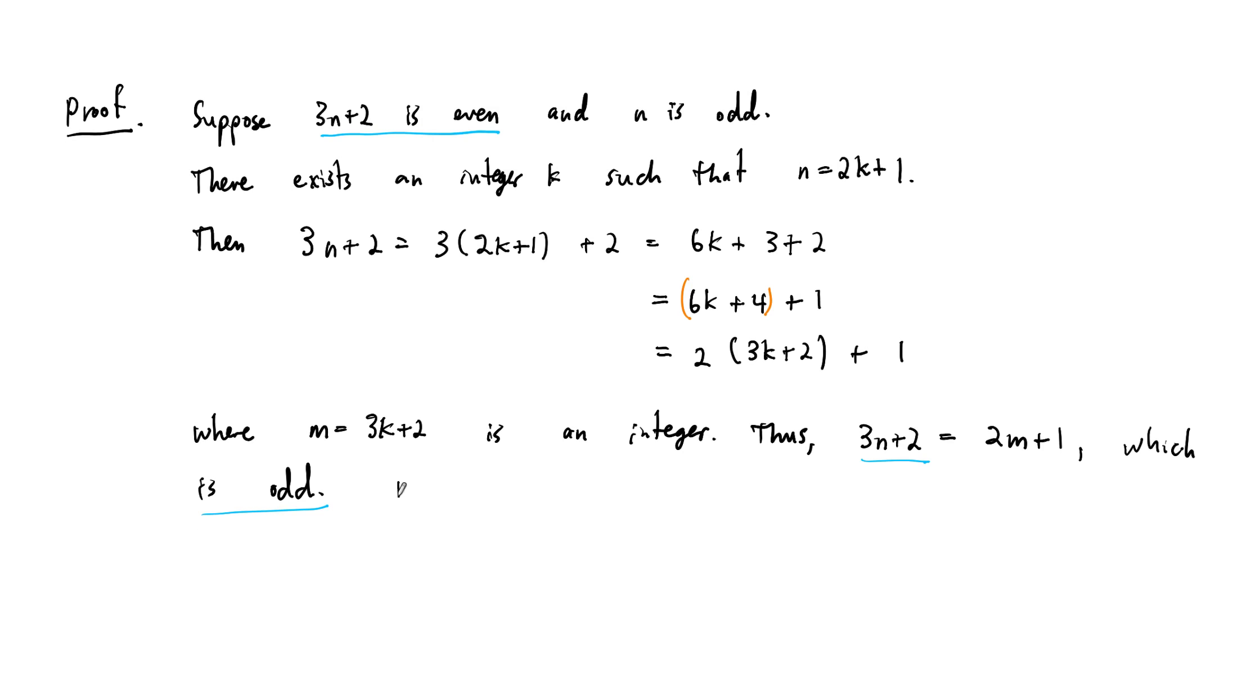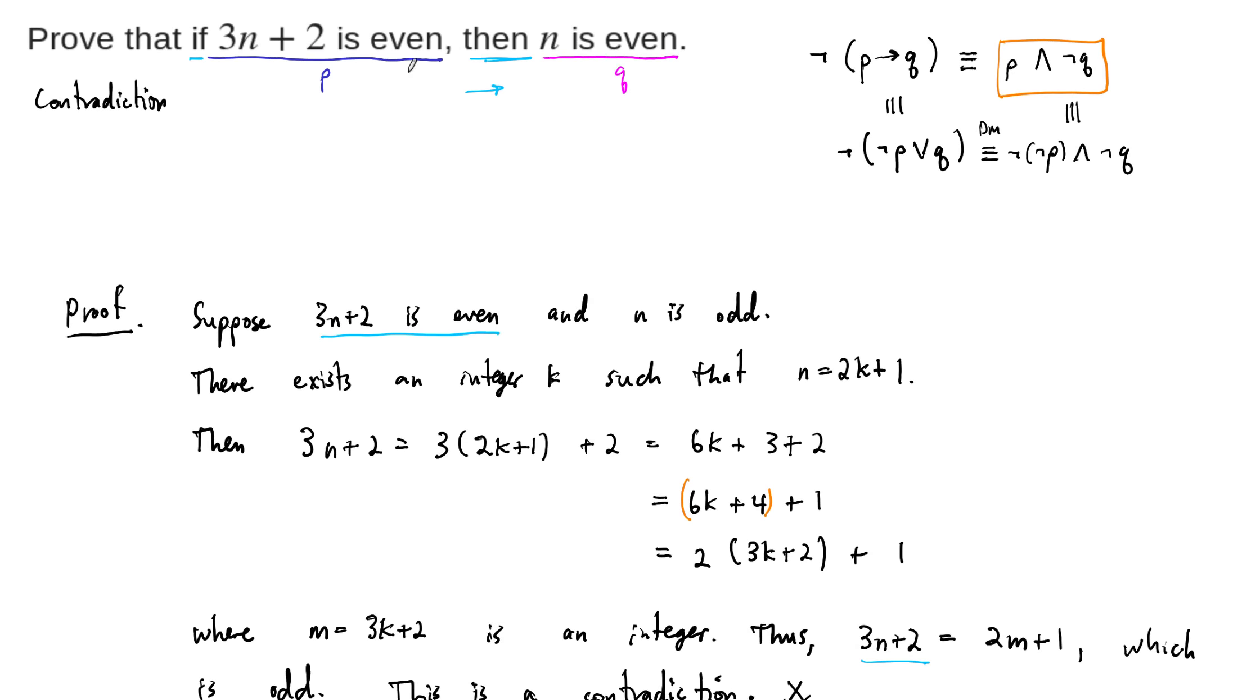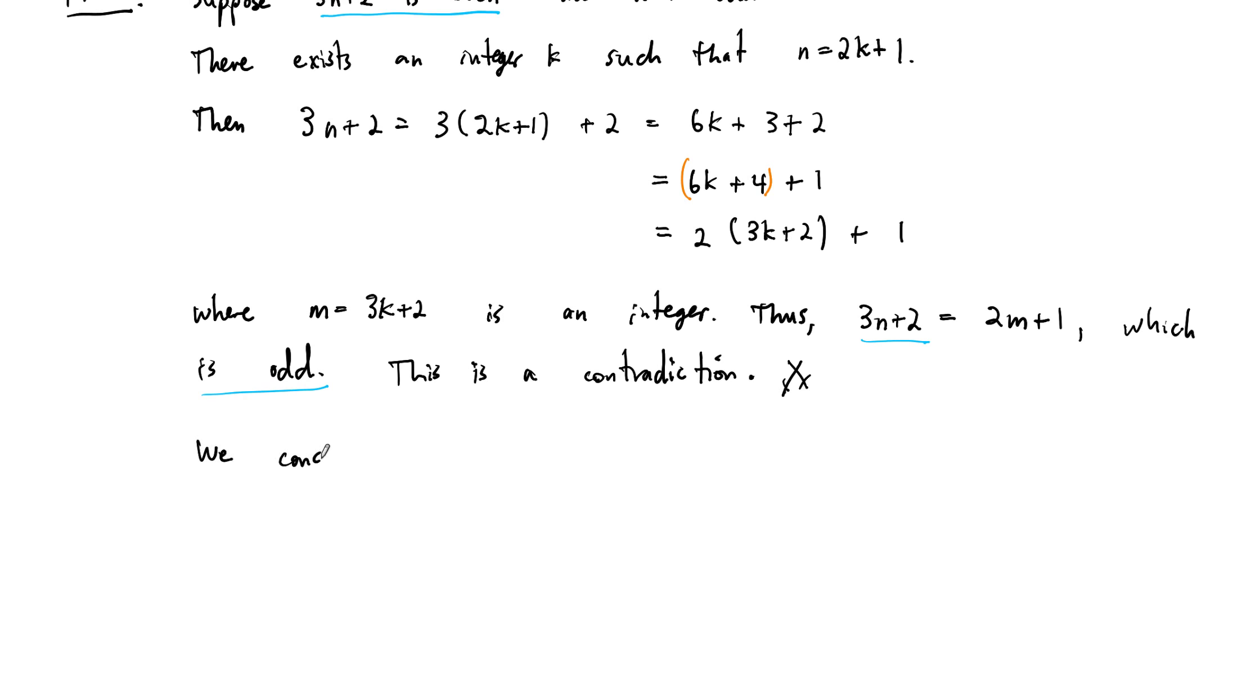So this is a contradiction. You should always tell your reader when the contradiction happens, especially as you're just starting off your proof writing career. This is a contradiction. And so then, what can we conclude? We conclude the entire logical statement that we have up there. We conclude that if 3n plus 2 is even, then n is even. That's exactly what we wanted to prove. We've proved it by contradiction.